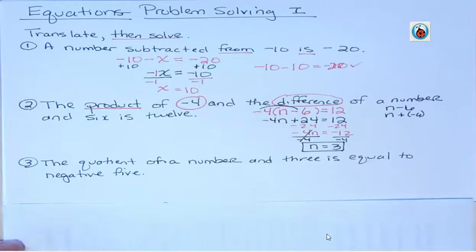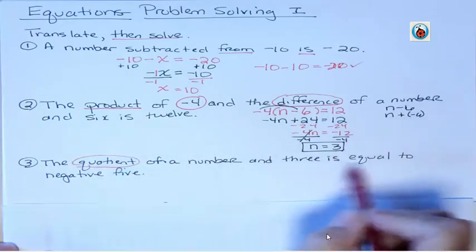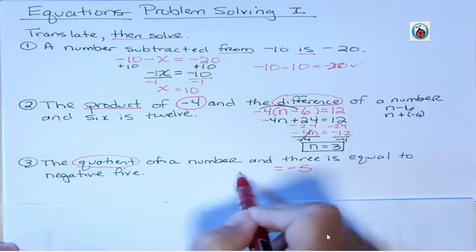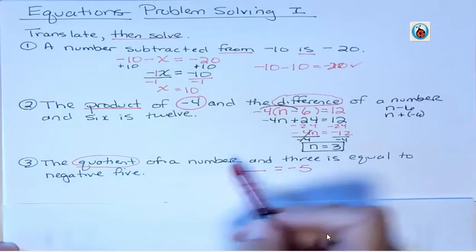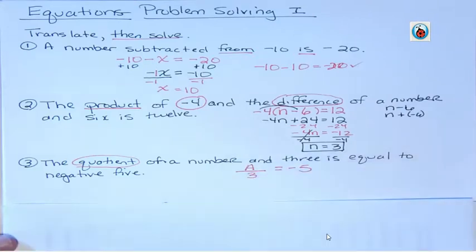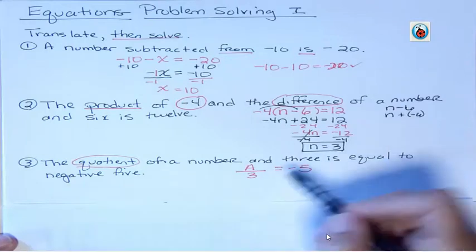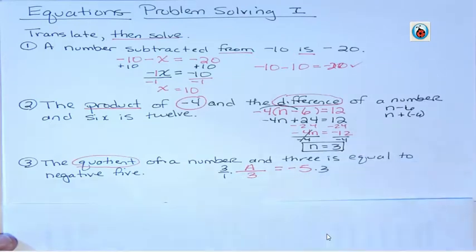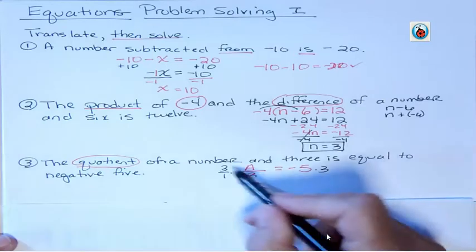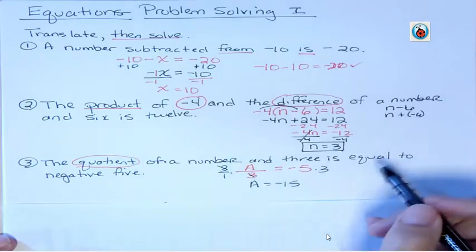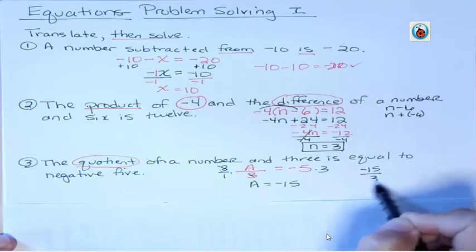Next one says the quotient of a number in 3 is equal to negative 5. A quotient is equal to negative 5. So I know that my equation equals negative 5. And it's a quotient and a quotient is a division problem. So what am I going to divide? A number, whatever stated first has to go on top, I'm going to call that a, and 3. The quotient of a number in 3 is negative 5. And now I'm going to solve that because I have something divided by 3, I'm going to multiply by 3. And now my 3s cancel, leaving a, and negative 5 times 3 is negative 15. The quotient of a number in 3 is equal to negative 5. Negative 15 divided by 3 does equal negative 5.